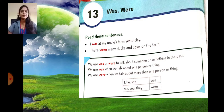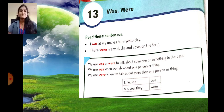So students, with singular we are using was. With plural we are using were. In this box you can see: with I, he, she we use was. With we, you and they we use were.